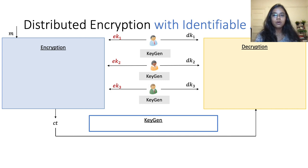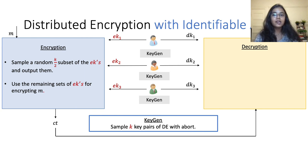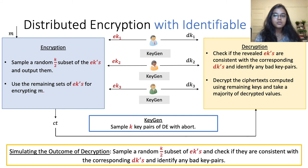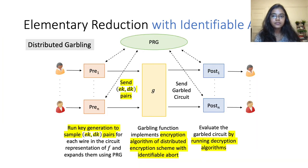For upgrading to security with identifiable abort, the key generation algorithm samples multiple key pairs of the distributed encryption scheme achieving security with abort. During encryption, we sample a subset of the keys for validation by outputting the encryption keys, and use the remaining keys redundantly by re-encrypting multiple copies of the message under these keys. The decryption algorithm checks if the revealed keys are consistent with the corresponding decryption keys, identifies any bad key pairs, and decrypts the ciphertexts using the remaining keys. For predicting the outcome of decryption, we sample a random subset of the encryption keys and check whether they are consistent with the corresponding decryption keys. Finally, when such a distributed encryption scheme is used along with the standard garbling approach, the resulting protocol achieves security with abort.